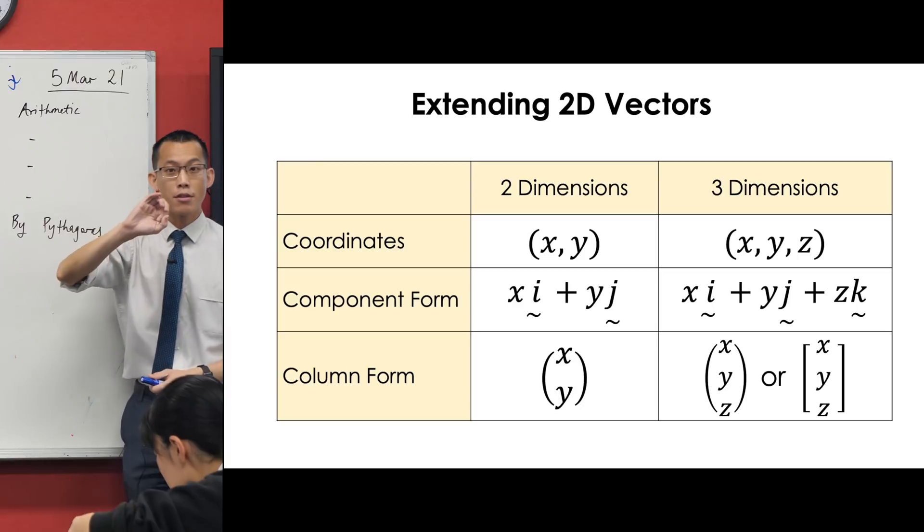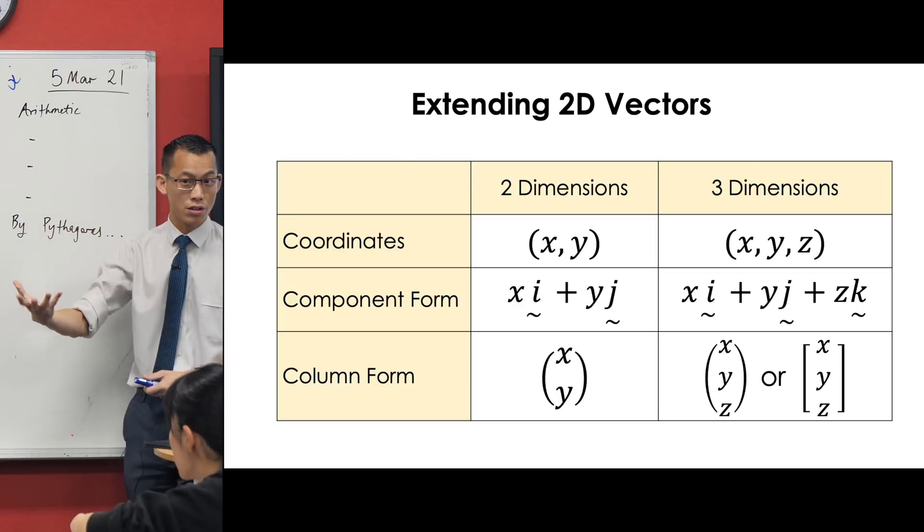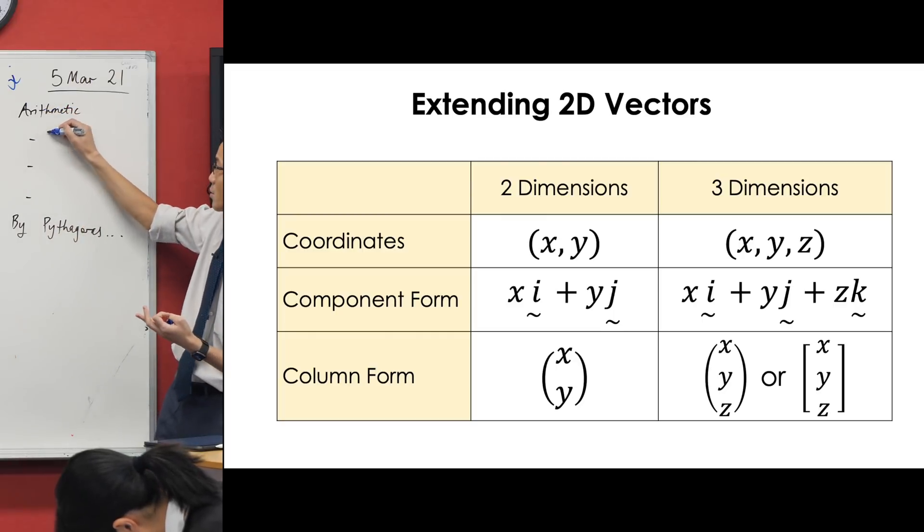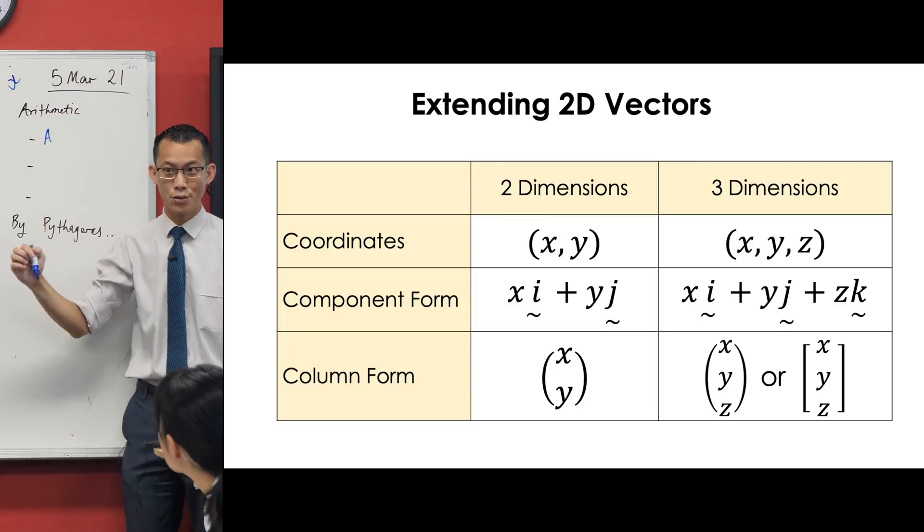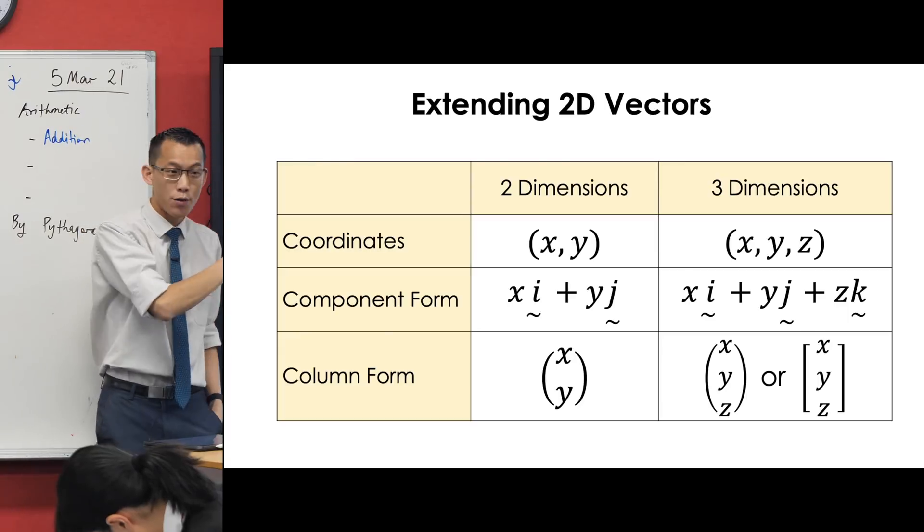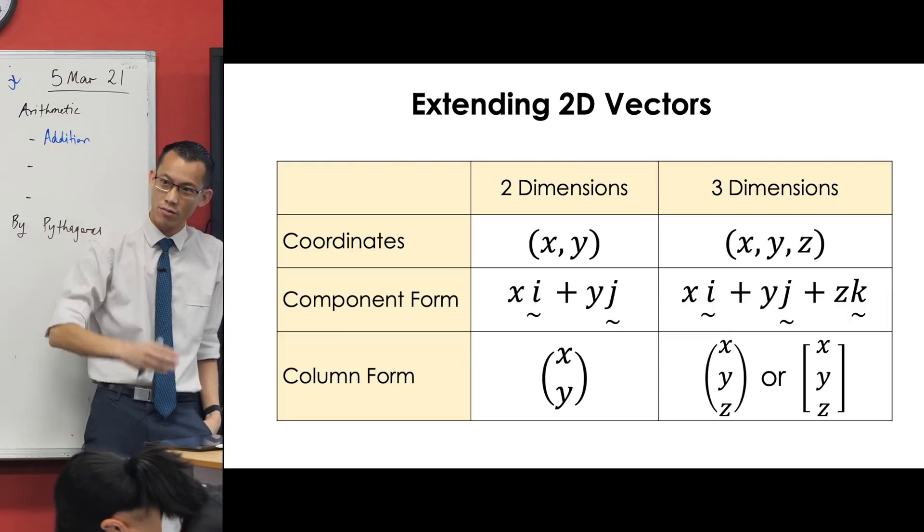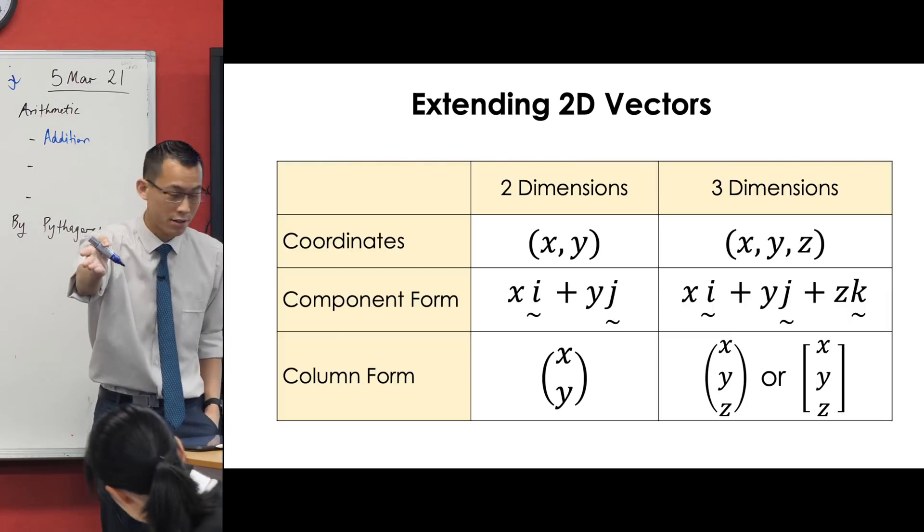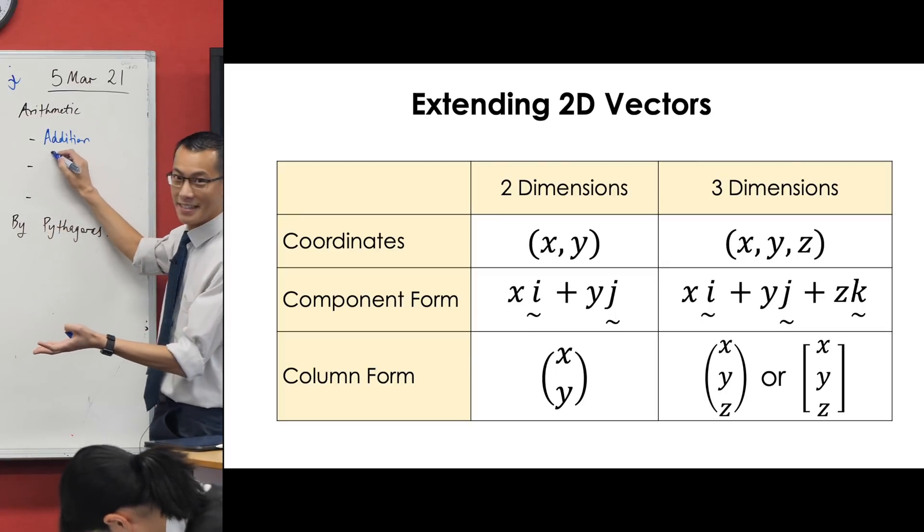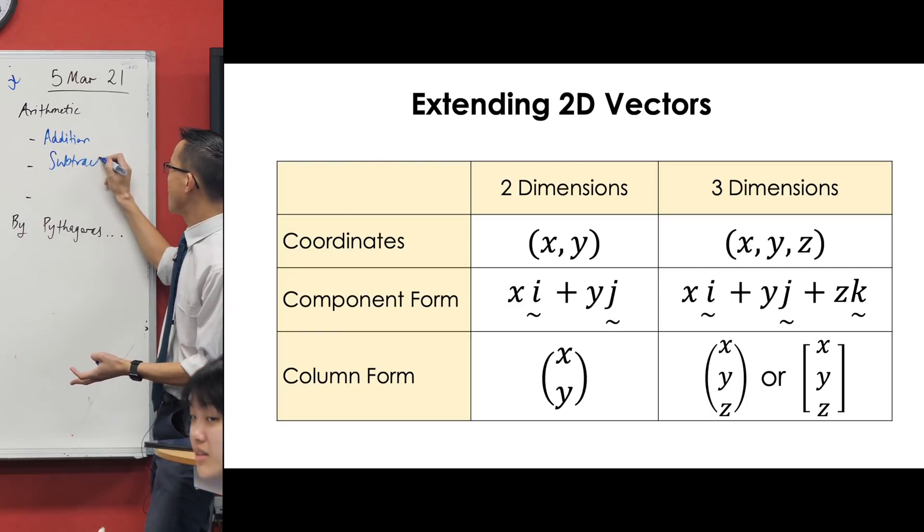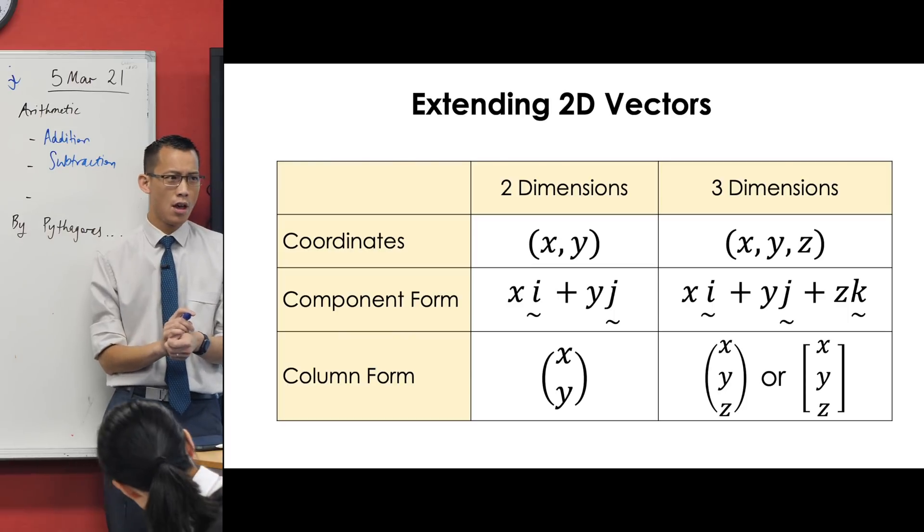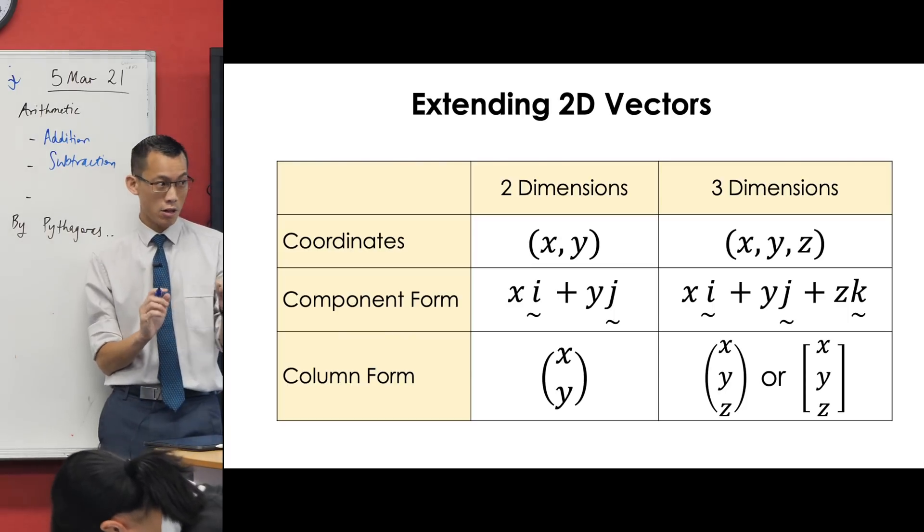Once you've got this coordinate system, this way of expressing vectors in three dimensions, everything that you've learned in the foundation of working with 2D vectors stays the same. So, arithmetic, for example - there are three operations that you can do with 2D vectors. What were they again? Start with the easy one. You add vectors together. Opposite of addition is subtraction. And then the last was when we took a scalar and we multiplied.